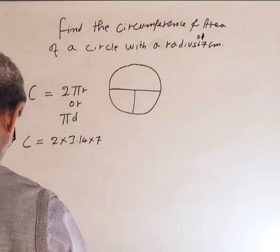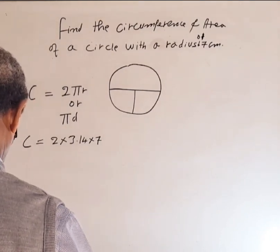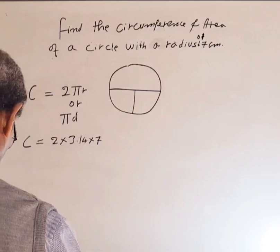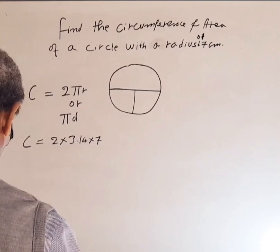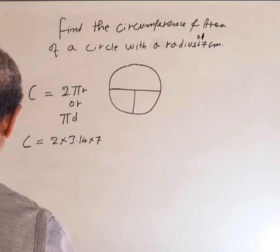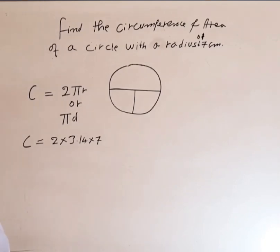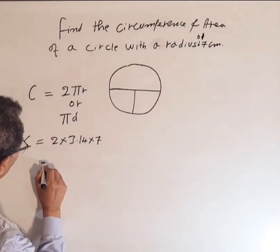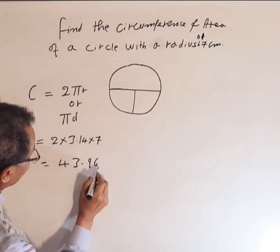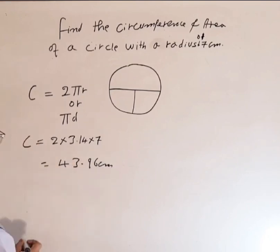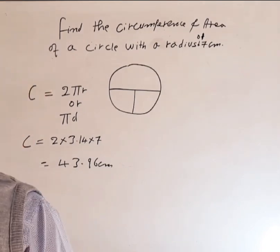2 times 3.14 times 7. It is 43.96. So C equals 43.96 centimeters.